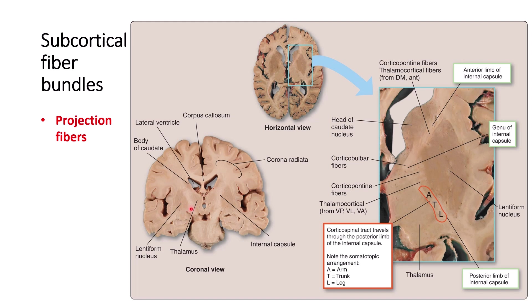Looking more closely at the internal capsule, it has an anterior limb located between the caudate nucleus and the lentiform nucleus, and a posterior limb. In the anterior limb, corticopontine fibers are located — they go from cortex to the pons and then to the cerebellum. Thalamocortical fibers are also there, coming from the medial and anterior nuclei of the thalamus.